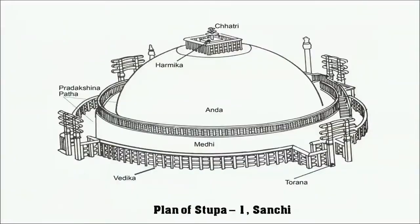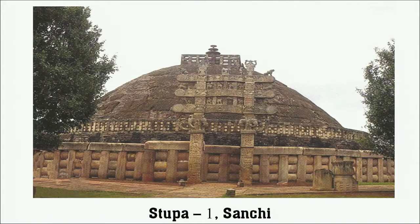The Sanchi stupa structure is seen here. Before this stupa there were different things which happened and stupas were made in the form of relief. The present-day Sanchi stupa is seen in this condition and it is a world heritage site declared by UNESCO.